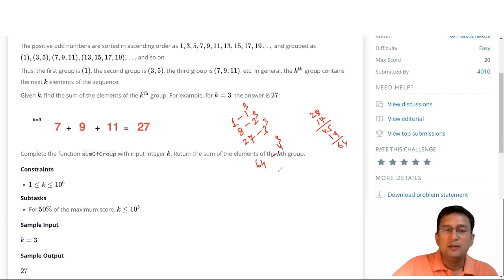This means that for the K-th group, the answer is the sum - the K-th group is the answer.